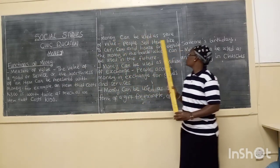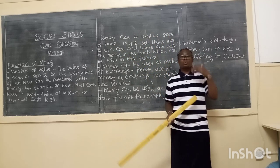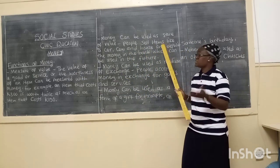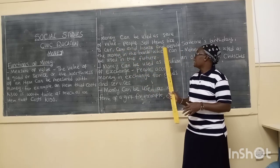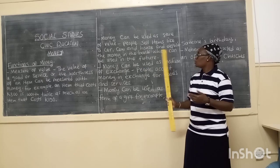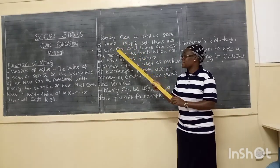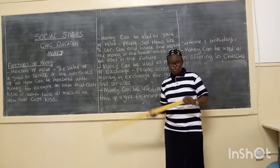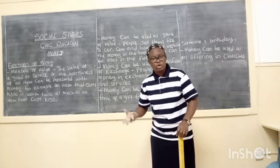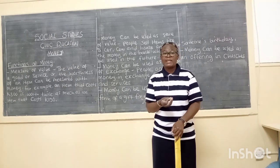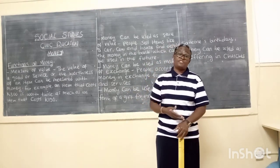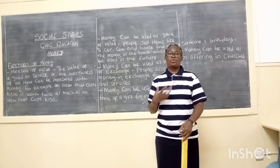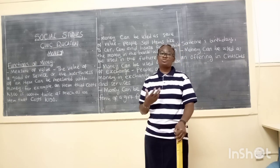Money can also be used as a store of value. Store means to keep for the future. So people sell items such as a car, a cow, a house, and deposit the money in the bank which can be used in the future. So when you sell those items and keep the money in the bank, you are using money as a store of value. You can have maybe 100 kwats and keep the money in the bank to pay school fees next term. That's why we say money is used as a store of value.